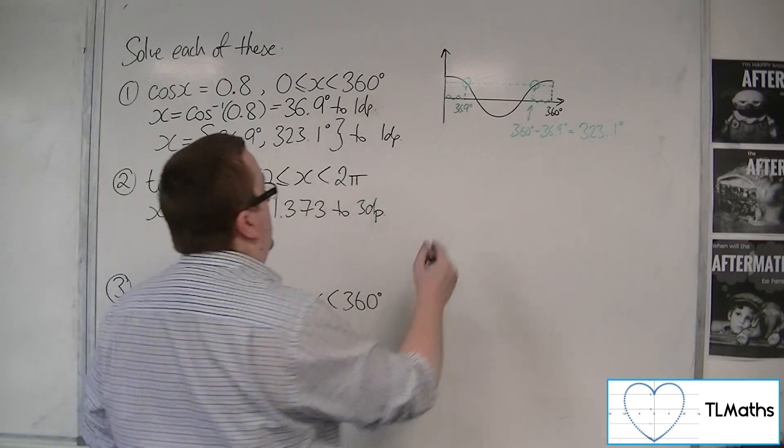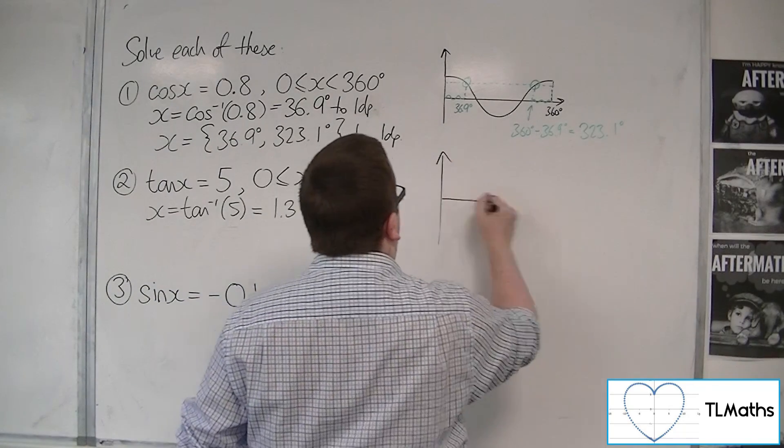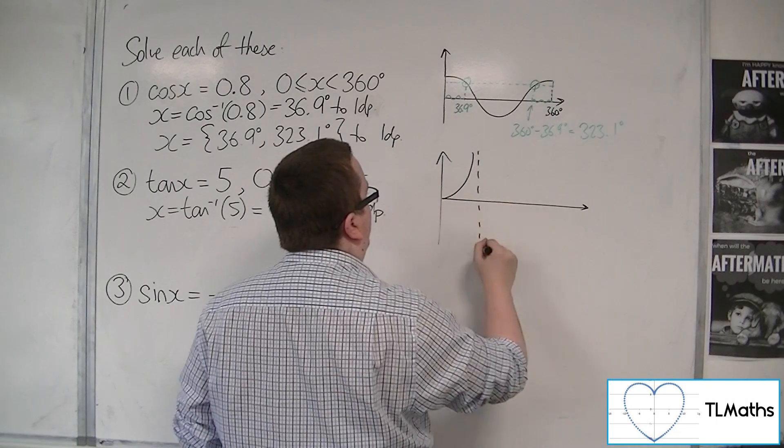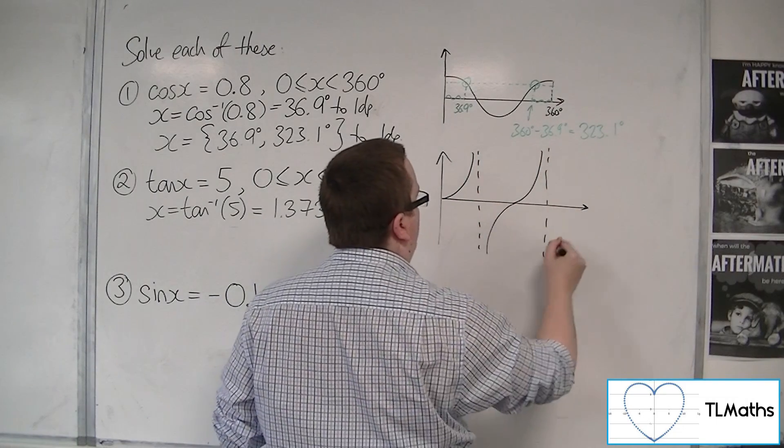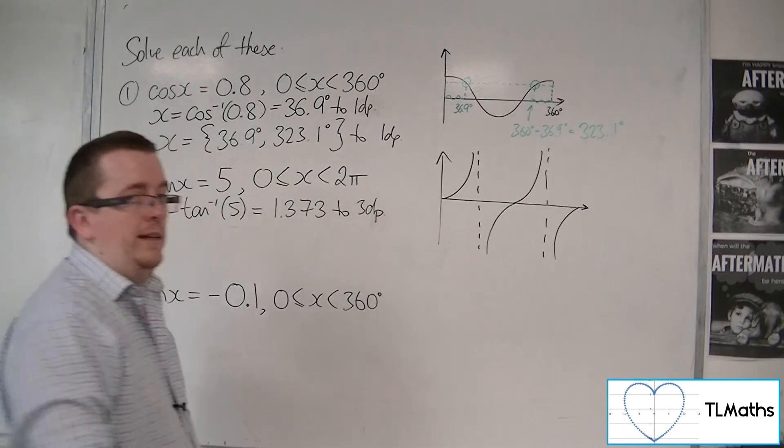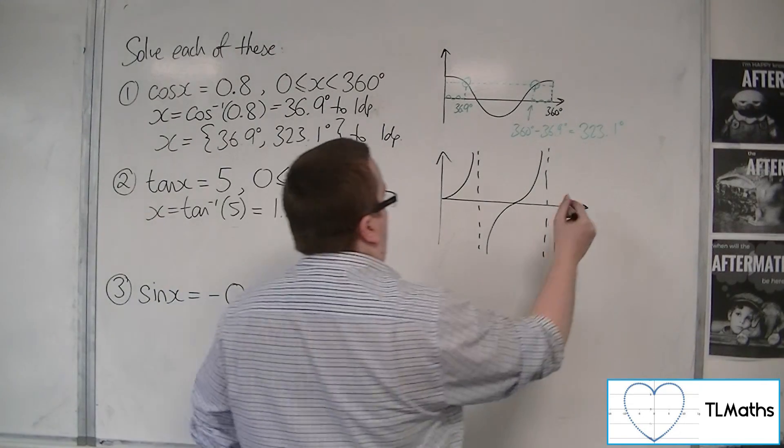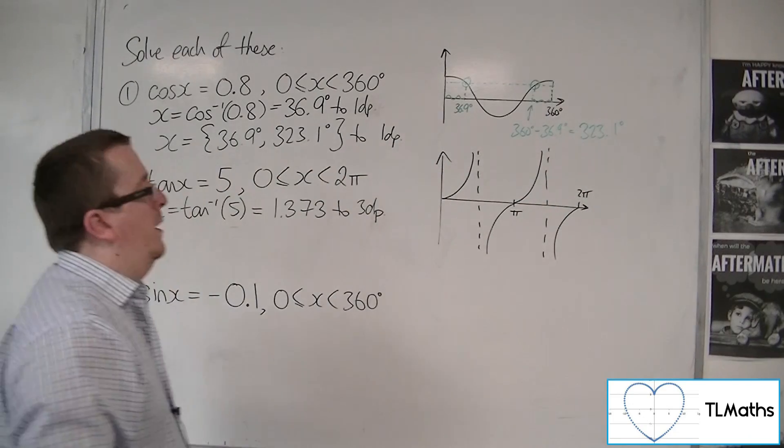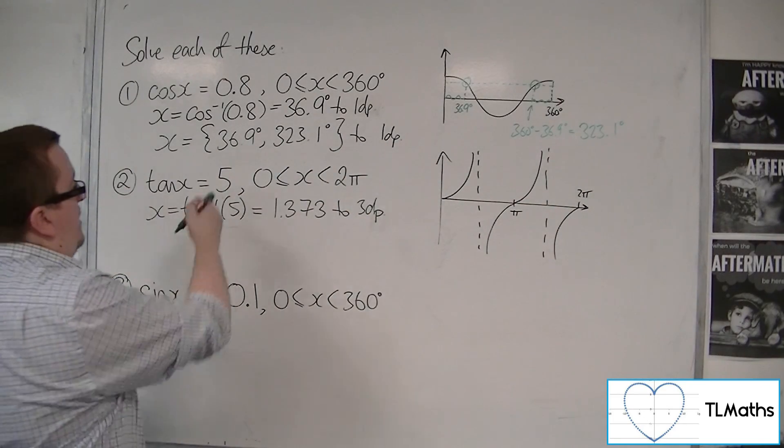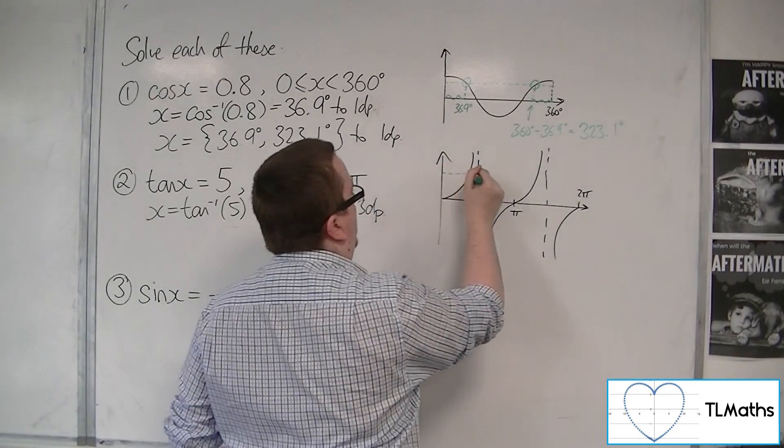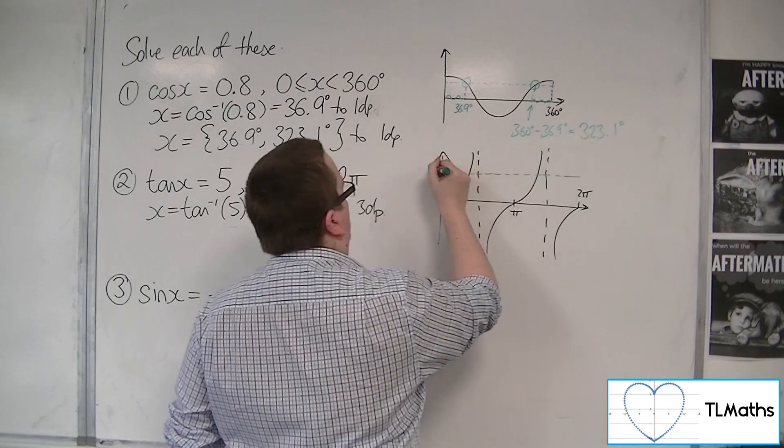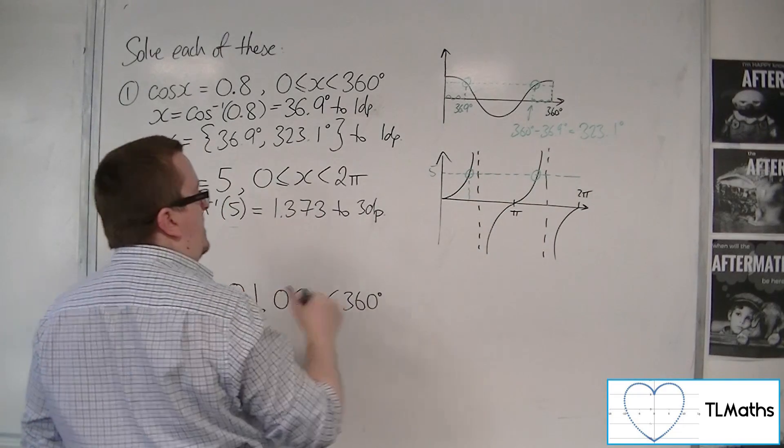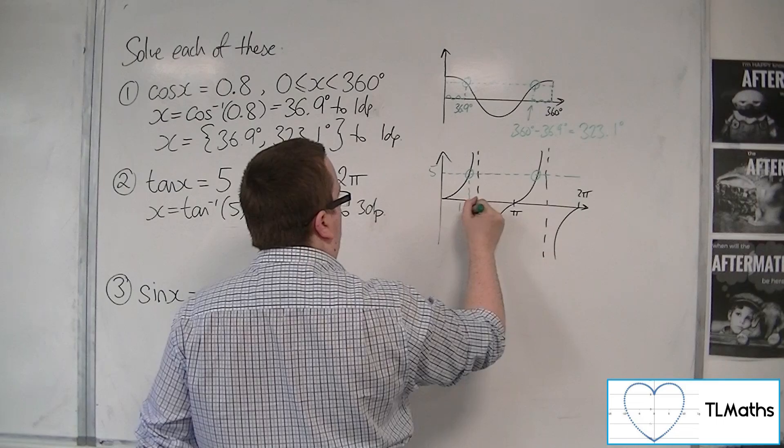Then we sketch tan. You might have known by the amount of sketching we've already done that you're going to learn these curves very quickly. That's the idea, anyway. So we're going between 0 and 2π. So 5 will be somewhere up here. We can see that it crosses the curve twice, once here. So that's the 1.373.